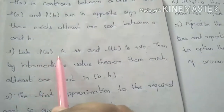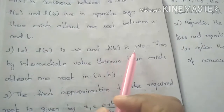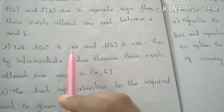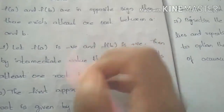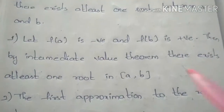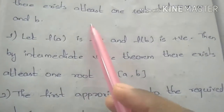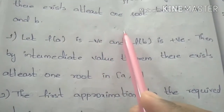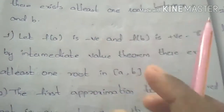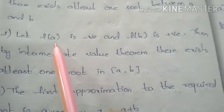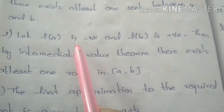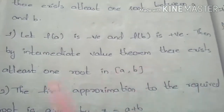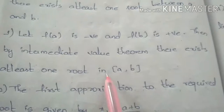First, let f of a be negative and f of b be positive. We have an interval [a, b]. If f of a is negative and f of b is positive, then by the intermediate value theorem, there will exist at least one root in between a and b.